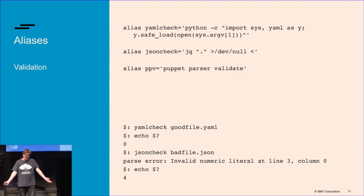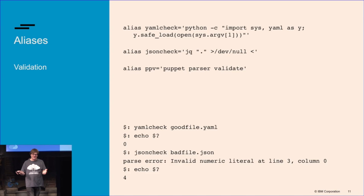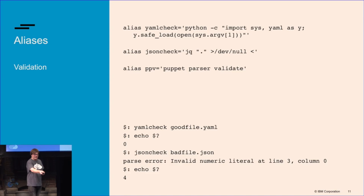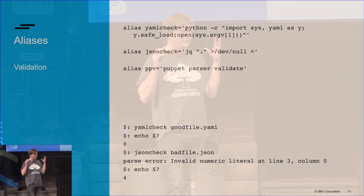I'm an operations engineer by trade, so I write a lot of files in YAML and JSON. It really sucks to wait 15 minutes for tests to find out that I put a trailing comma in JSON and don't have valid JSON. So I have three aliases: 'yaml-check,' 'json-check,' and 'puppet-parser validate' that will basically just validate that a file is valid JSON, YAML, or whatever — and this saves me a lot of time.